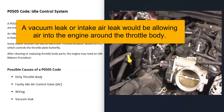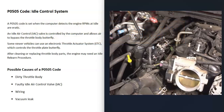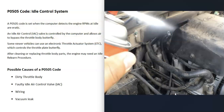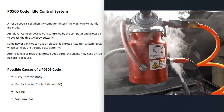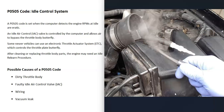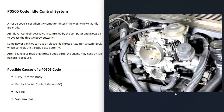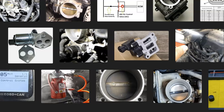Another cause is a vacuum leak, such as a loose or broken hose or a bad intake gasket. One method to find a leak is to start the engine and spray around suspected areas — if the idle changes, you've found the leak. Another method is using a smoke machine: feed smoke into the air intake and wherever the smoke comes out, that's where the leak is.